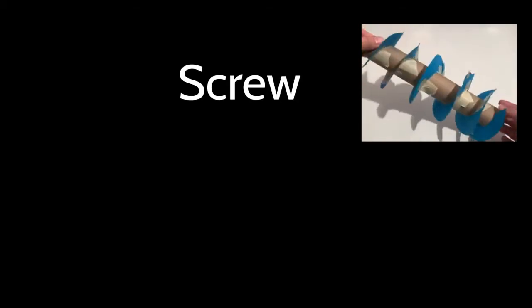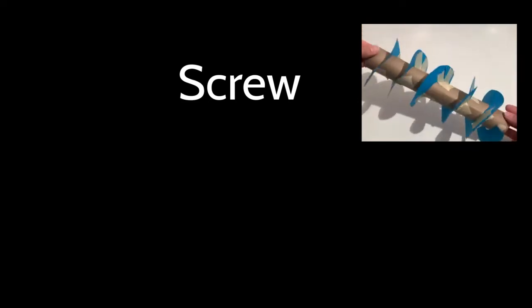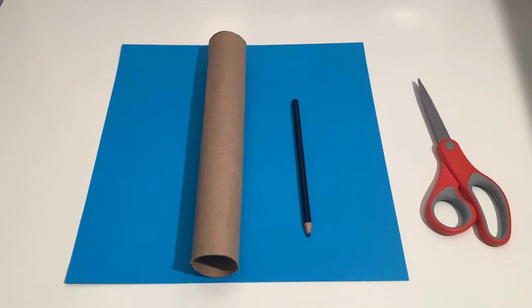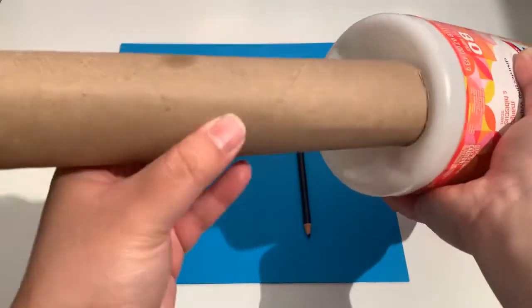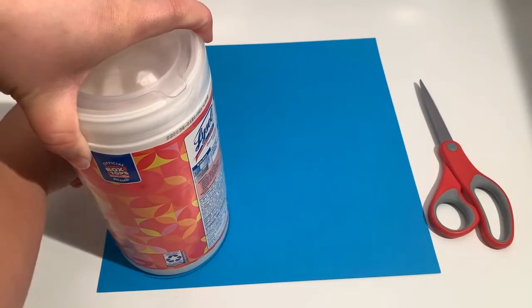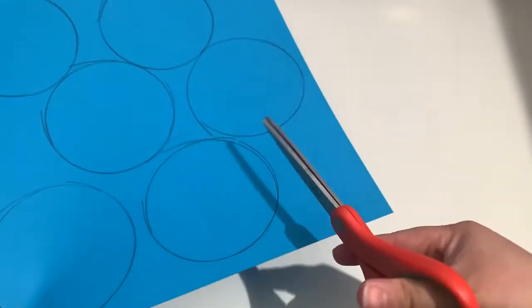A screw is an inclined plane twisting around a cylinder. Imagine a spiral staircase. This is a screw. To create one you will need a paper towel tube, cardstock, scissors, something to write with, and lots of tape.